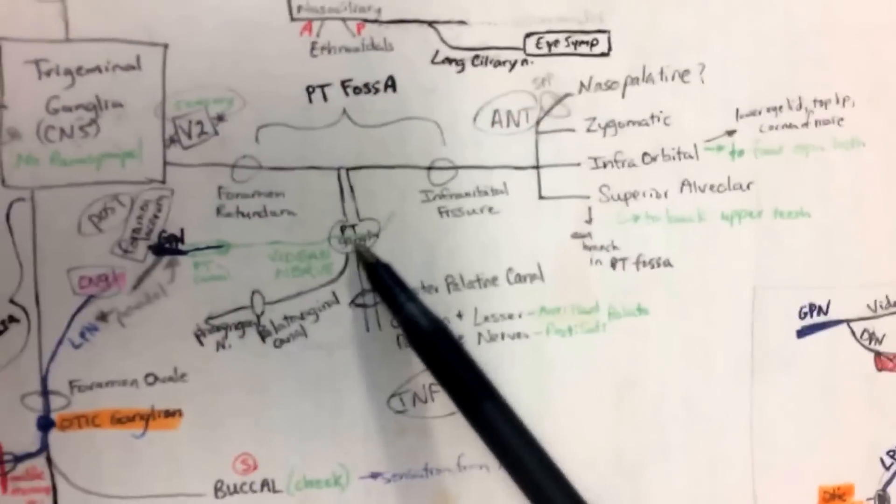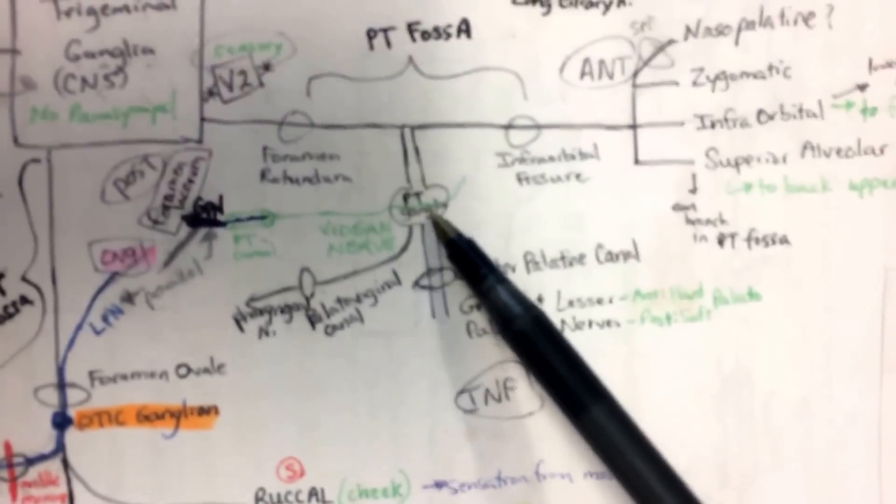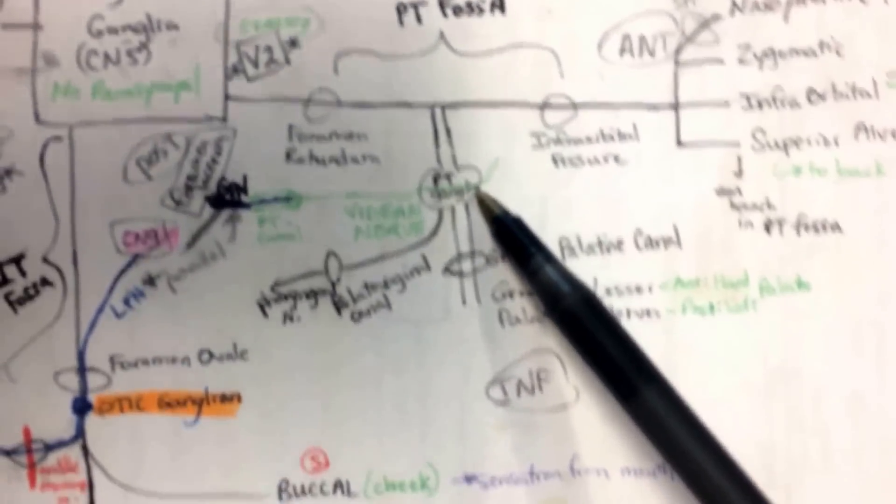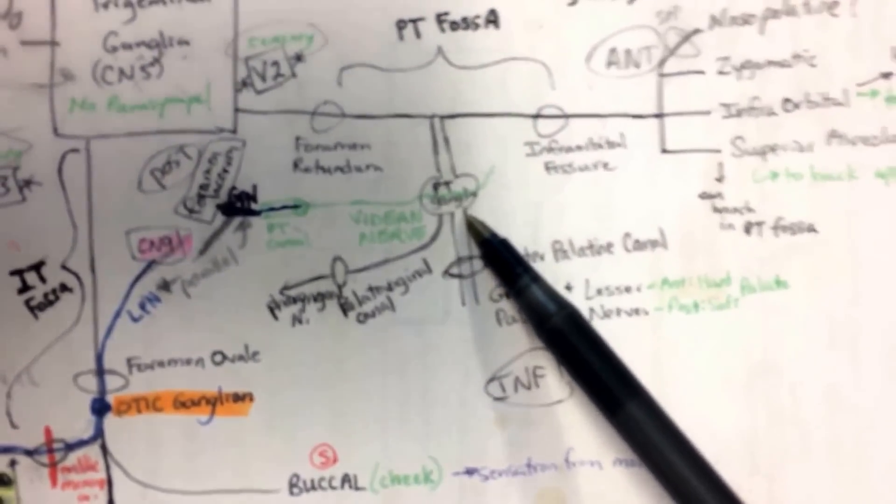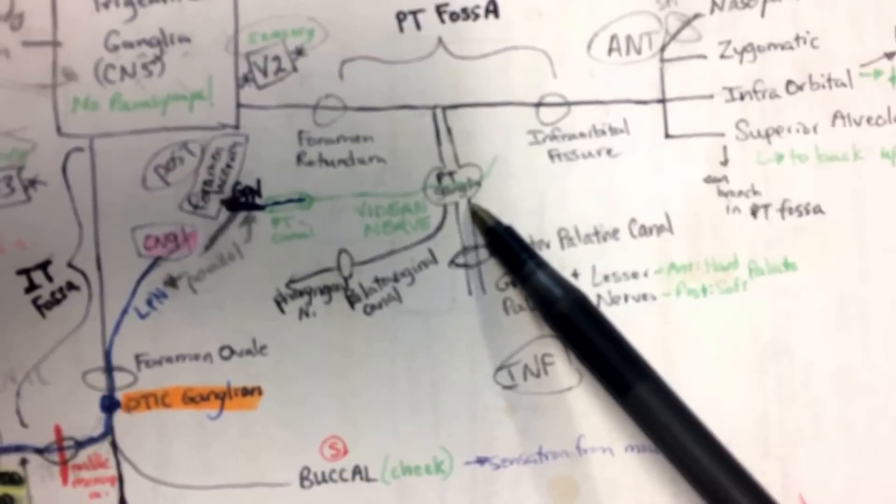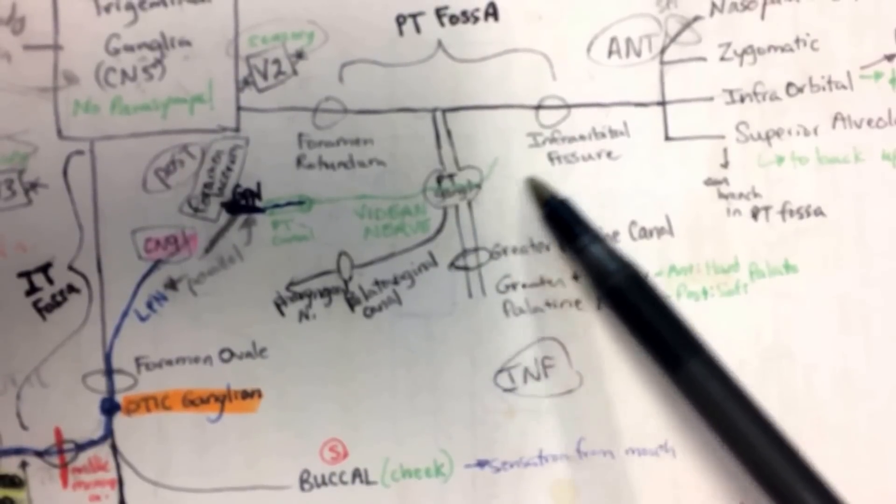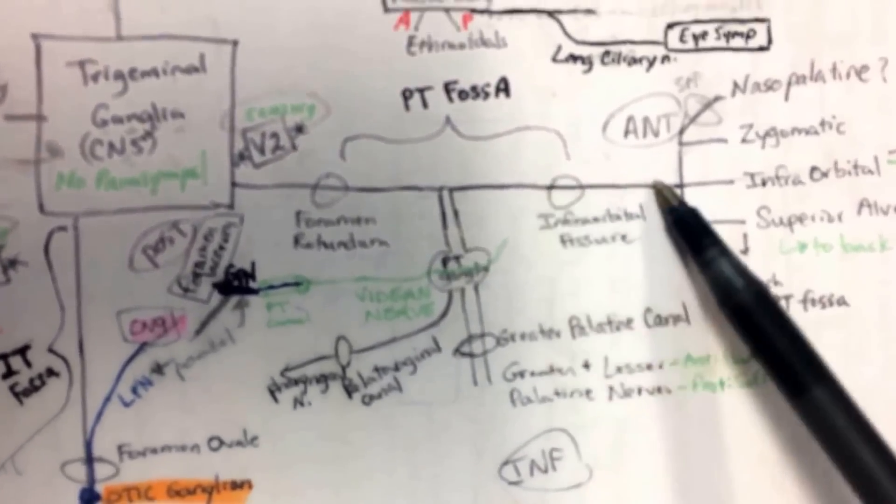All right, so we're getting back to it. Here we are. That connection has happened. And one last quick quiz question. What glands are we going to for greater petrosal after we bust through the PT ganglia? We should go to the nasal or oral and the lacrimal gland. Nasal oral mucosa and lacrimal gland. Good.